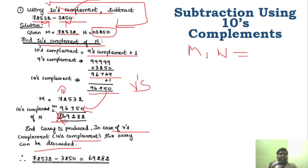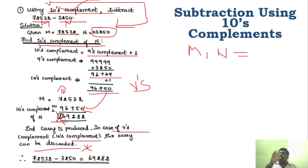You can see that the end carry is produced. In the case where R's complement is ten's complement, the carry can be discarded. So after discarding the carry, the remaining result — for example, 69282 — is the final answer.